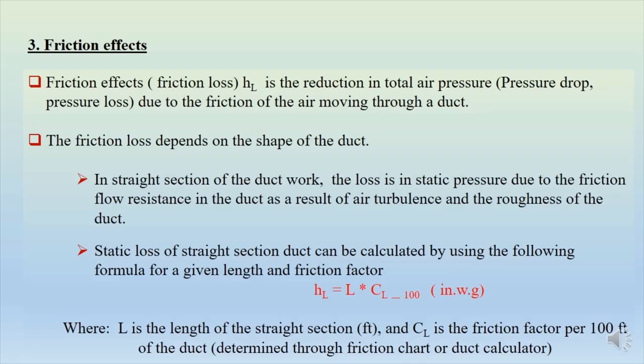Most HVAC applications fall in the transition range between laminar and turbulent flow, called transitional flow. Now let's see friction effects. Friction loss, HL, is a reduction in total air pressure — a pressure drop due to friction of air moving through a duct. This friction loss depends on the shape of the duct. In straight sections, the loss is in static pressure due to friction flow resistance from air turbulence and roughness of the duct.